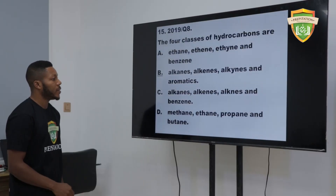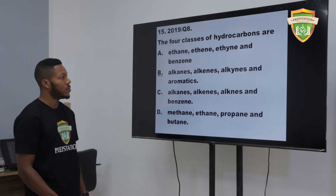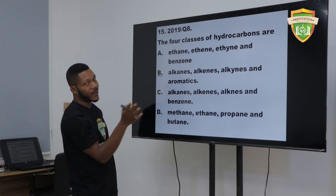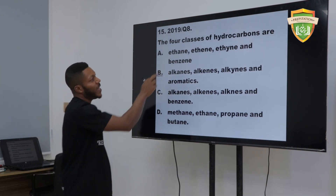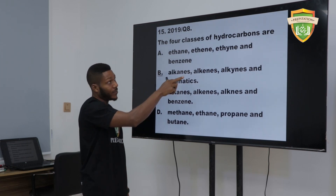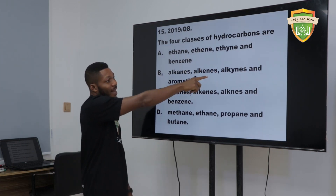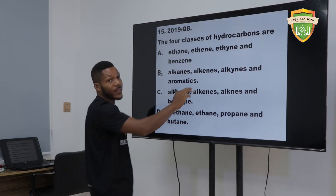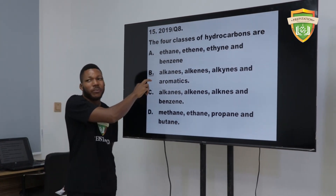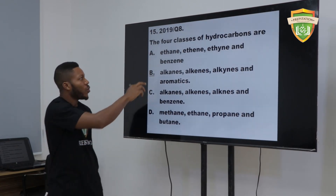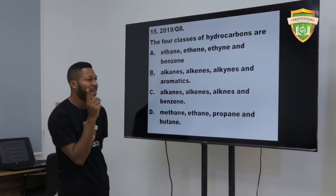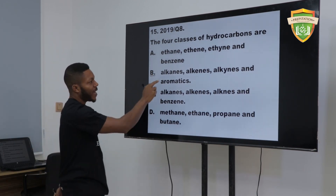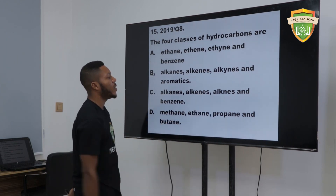2019, Question 8: The four classes of hydrocarbons are... This question is very tactical, you have to pay attention. Alkene is from alkanes, alkyne is from alkanes, benzene from aromatics. If there was no option B, you could have gone for option A. But the answer is B: alkanes, alkenes, alkynes, and aromatics.